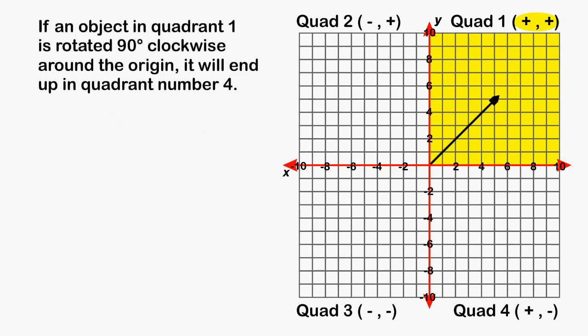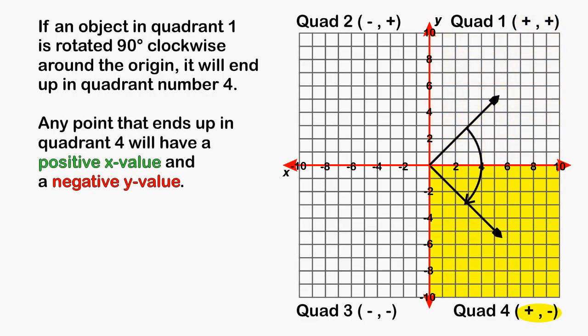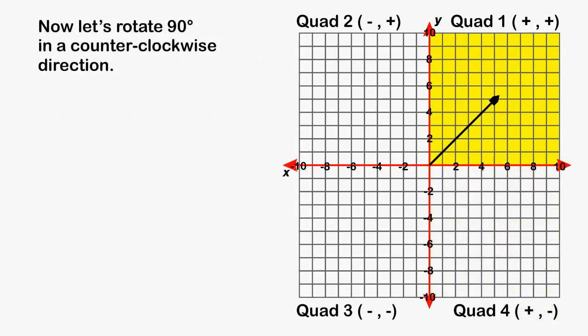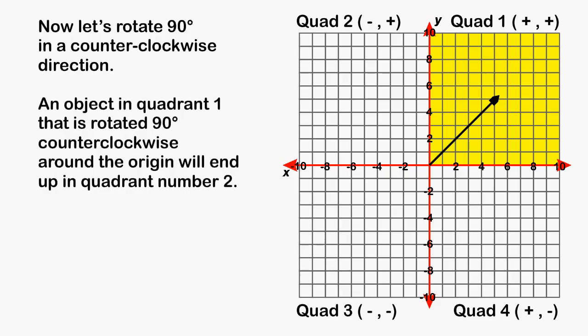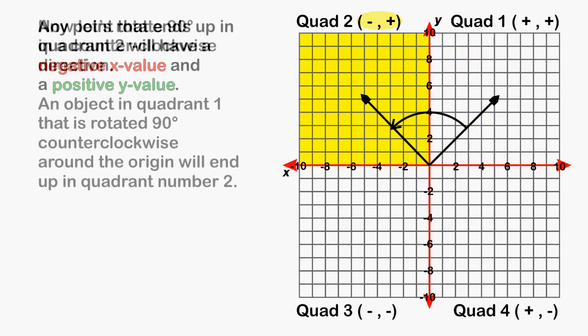For example, if you have an object that is located in quadrant number 1 and you rotate that object 90 degrees clockwise, that object is going to end up in quadrant number 4 where the x values are positive and the y values are negative. And if you have an object in quadrant number 1 and you rotate that object 90 degrees counterclockwise, that object is going to be rotated to quadrant number 2 where the x values are negative and the y values are positive.